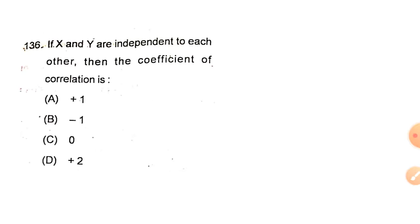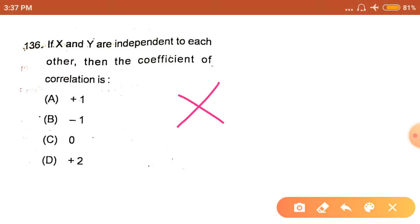The next question is: if X and Y are independent of each other, then the coefficient of correlation is... When two variables X and Y are not dependent on each other, that means they are not correlated, so their correlation coefficient becomes zero. The answer is option C.